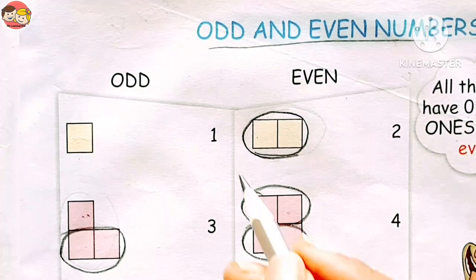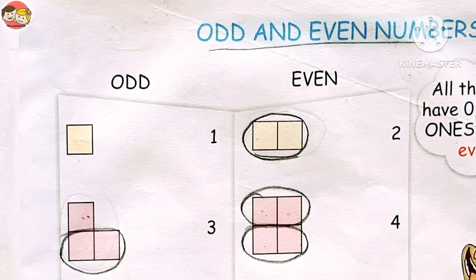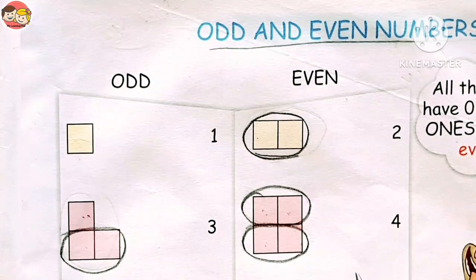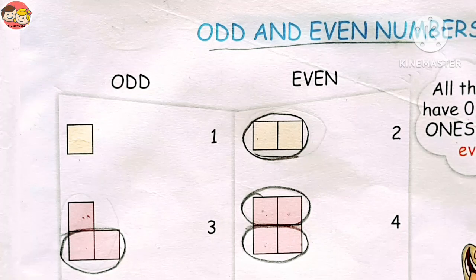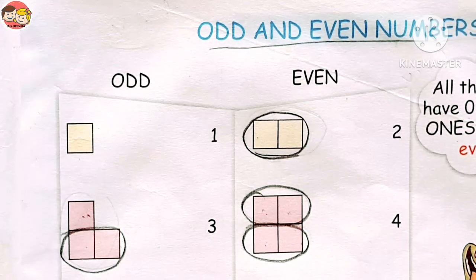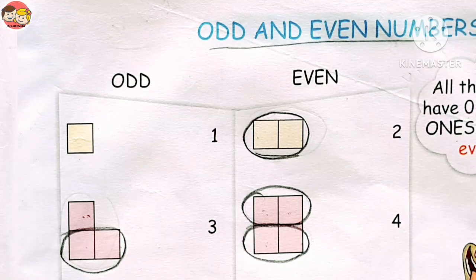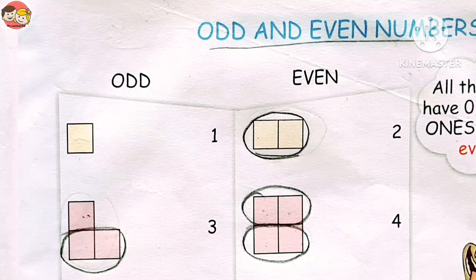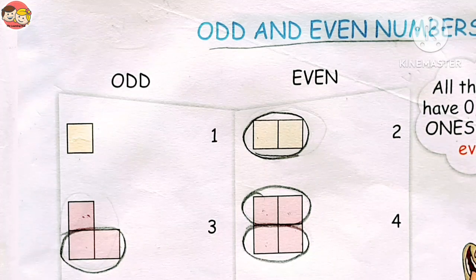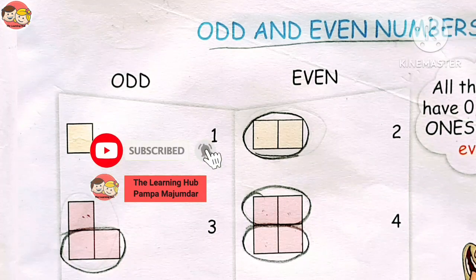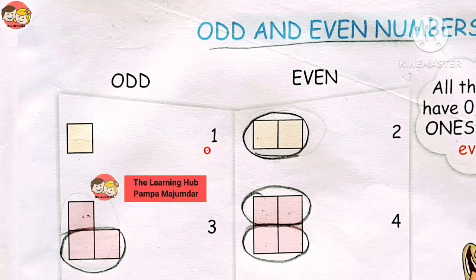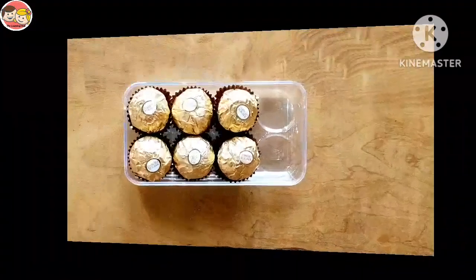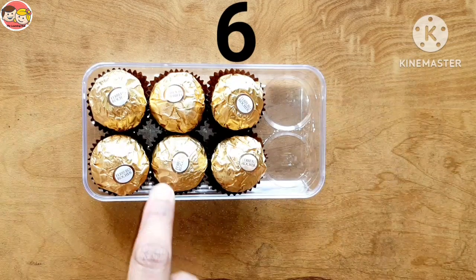So children, there are some numbers that can be put in pairs and some that cannot. All the numbers that can be paired are called even numbers, and all the numbers that cannot be paired are called odd numbers. Let's recall: the numbers that can be divided into two equal parts, are divisible by two without remainder, and can be grouped into pairs are called even numbers. Two, four, six, eight, ten, etc. are even numbers.